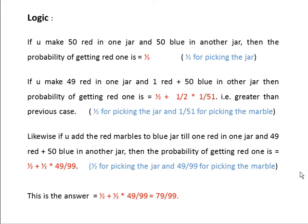Suppose if you make 49 red in one jar and 1 red plus 50 blue in another jar. Then the probability of getting red one is 1/2 for picking the red jar. And suppose if we pick the blue jar that has 50 blue marbles plus 1 red, then the probability is 1/2 plus 1/2 times